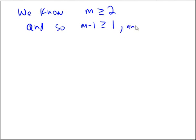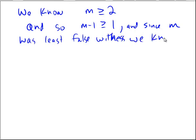Okay, and, since M was the least false witness, we know that P(m-1) is true. Now, if we were in the world of regular induction, this would be great, because we moved to the next step from the previous step. But, we're not in that world for this proof. We're in the world of strong induction.